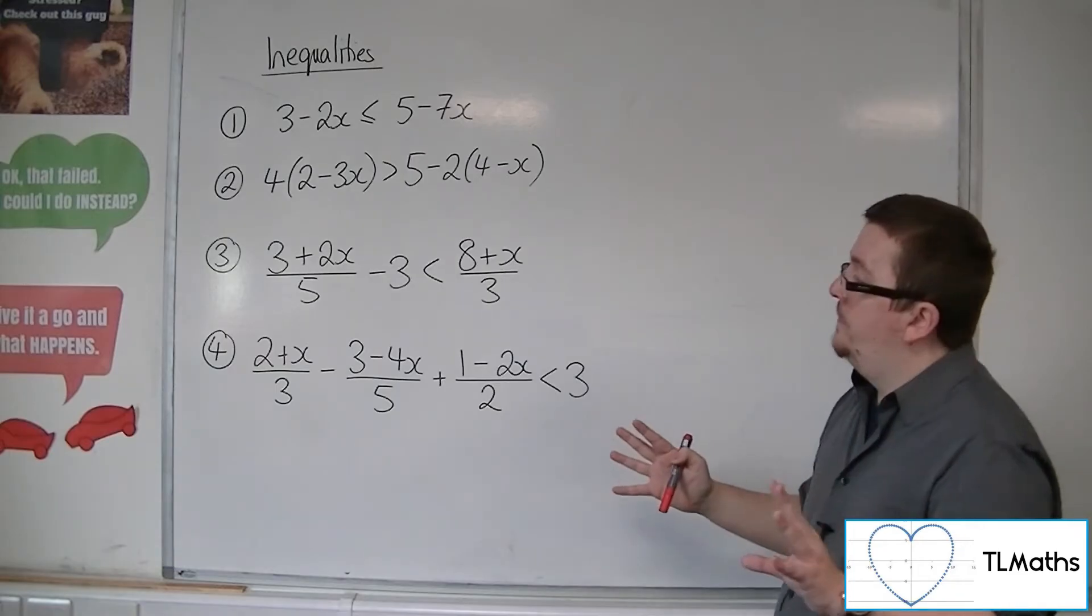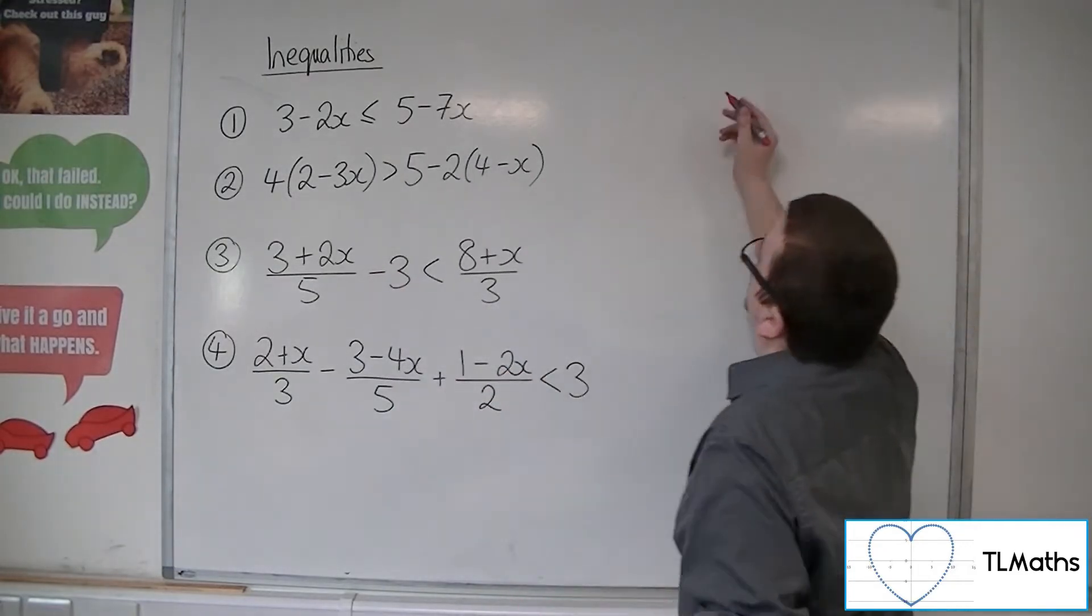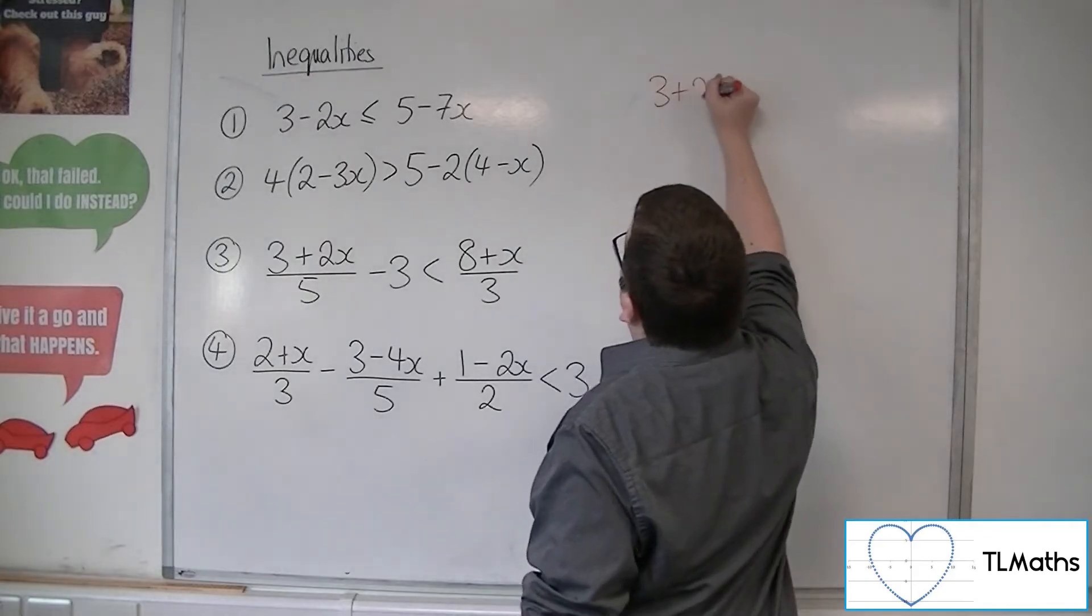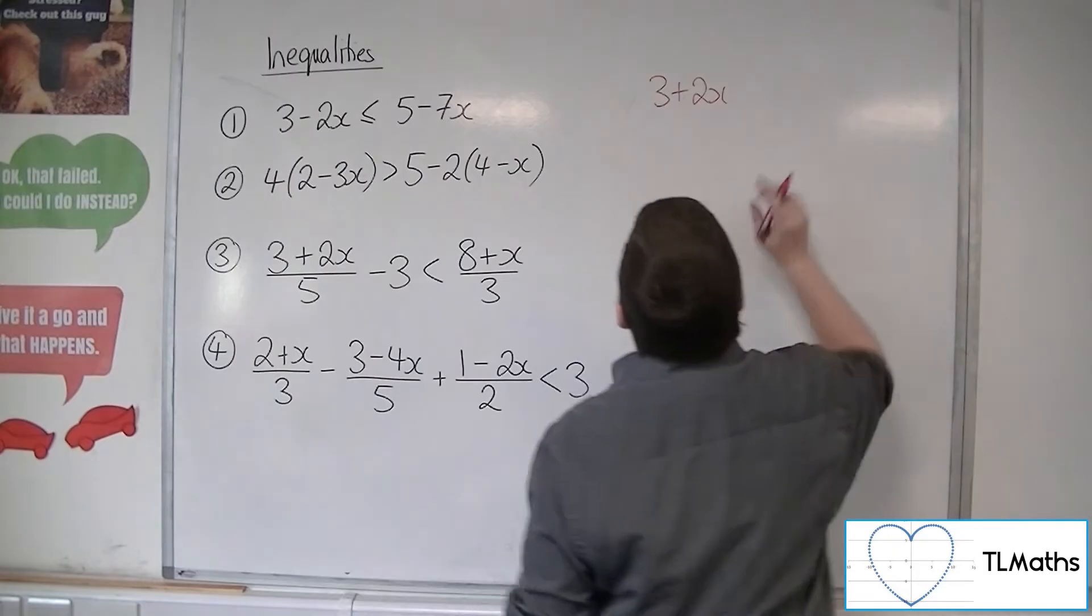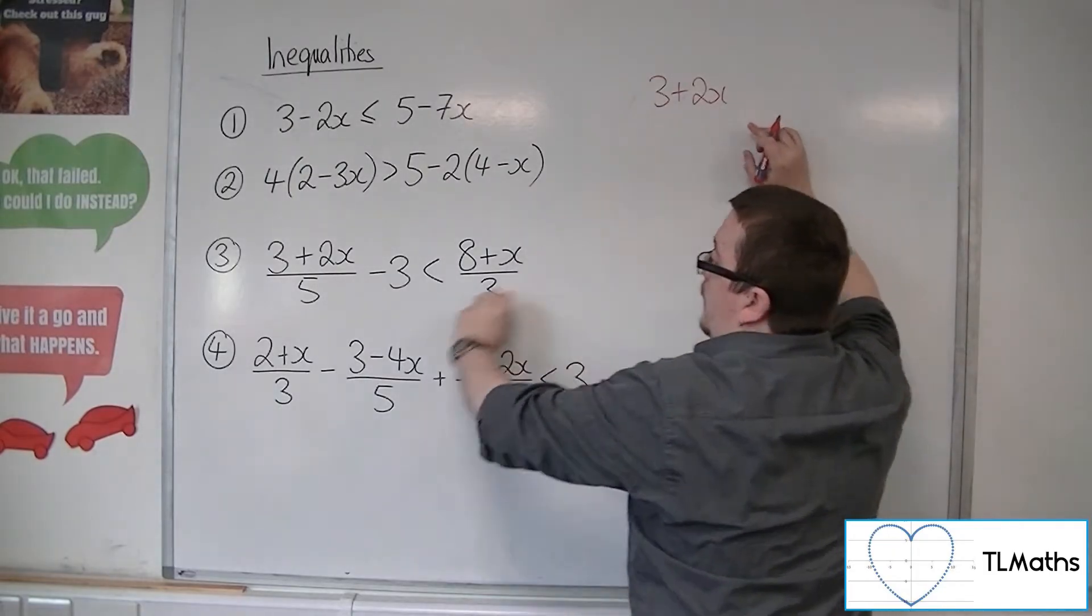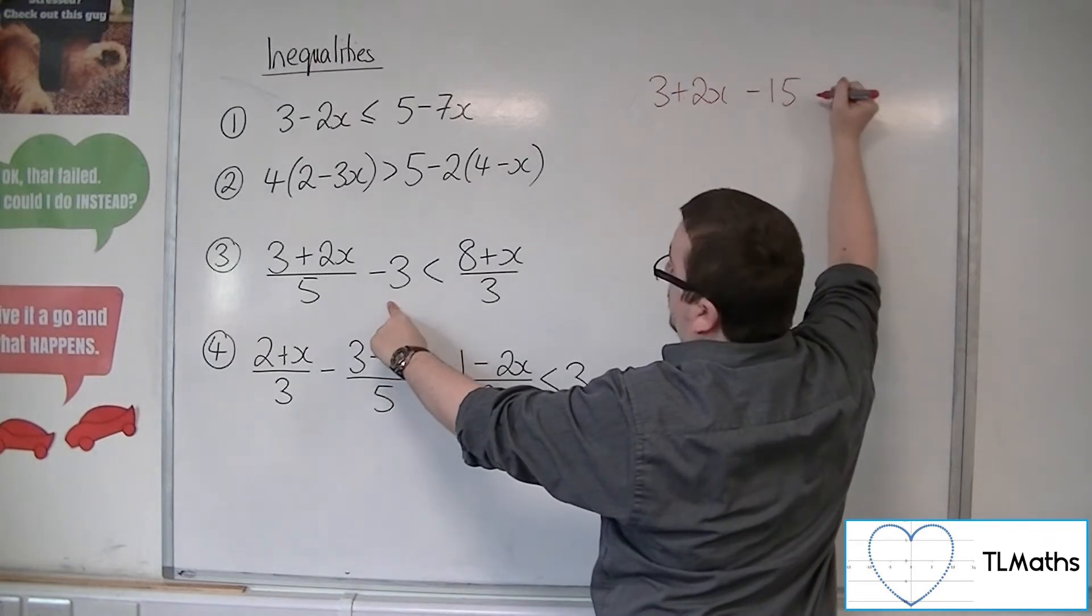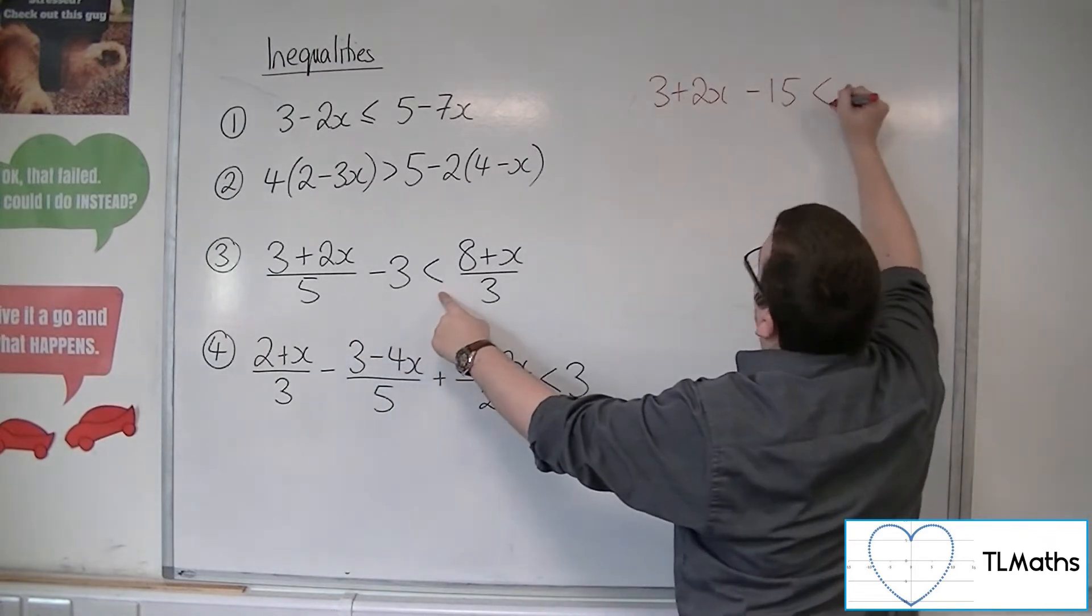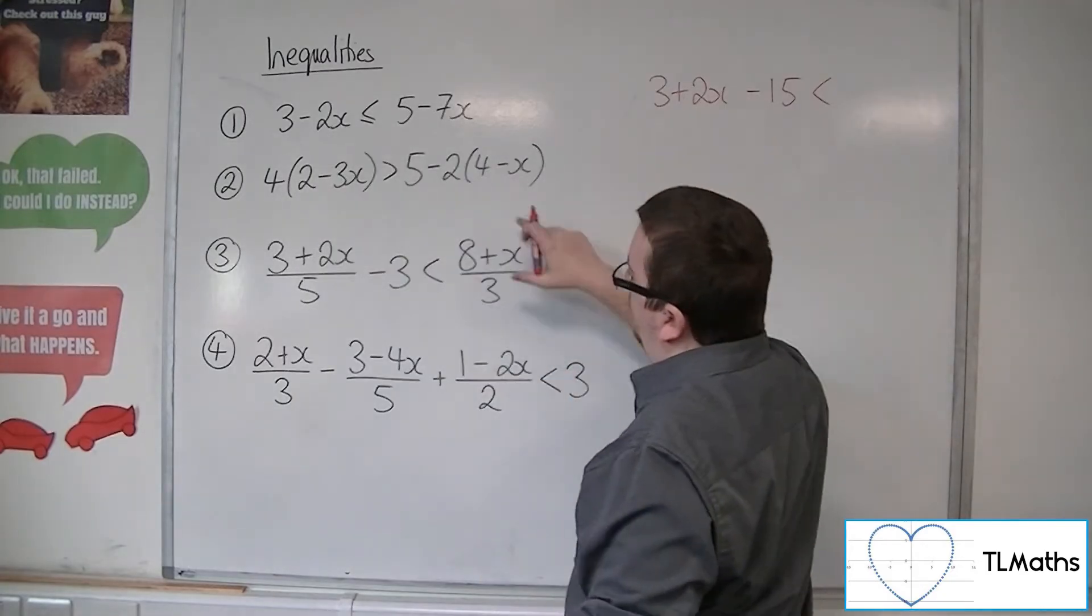It doesn't make a difference. But I'm going to multiply through by 5 because that's the first one on the left. So we've got 3 plus 2x. Because I've multiplied that by 5, I now just have the 3 plus 2x, the numerator. I've got to multiply the 3 by 5, so I've got minus 15. Then I've got less than 8 plus x over 3. Now I've got to multiply that by 5 as well.